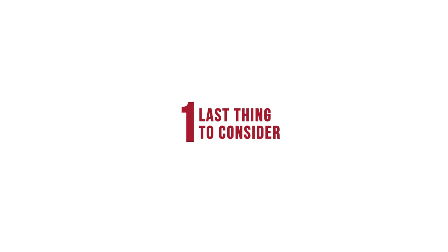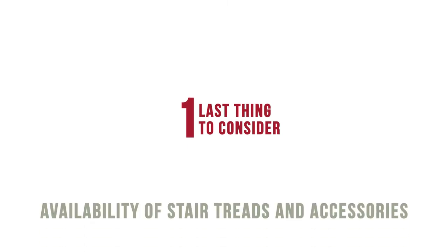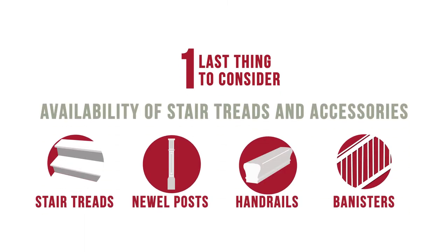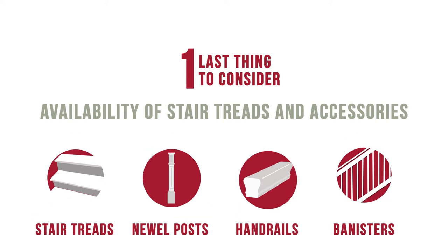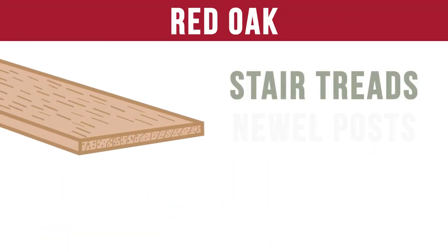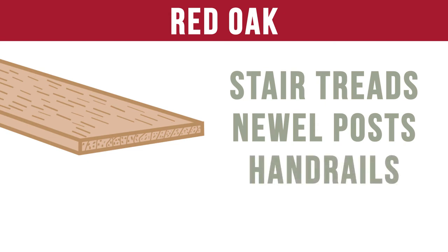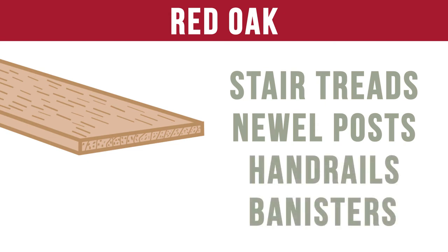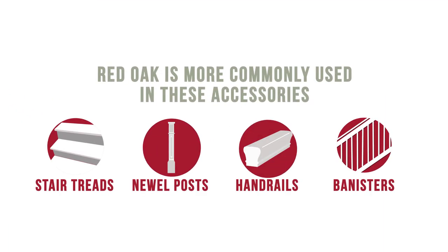Finally, one last difference to consider when buying red or white oak flooring for your next project is the availability of stair treads and accessories. Red Oak is far more frequently used in stair treads, newel posts, handrails, and banisters. If you already have oak stair treads in your home, chances are good that they are made from red oak. Because red oak is more commonly used for these accessories, white oak will cost slightly more.